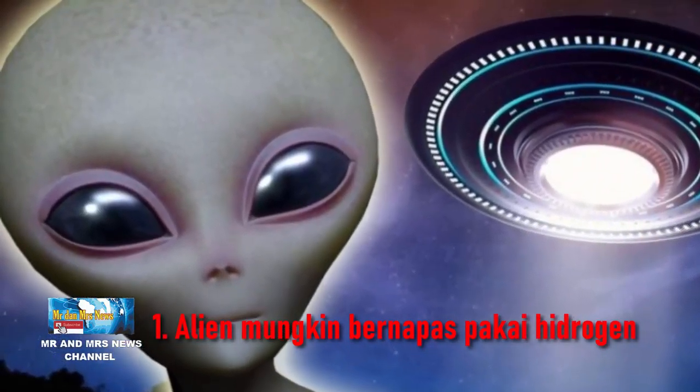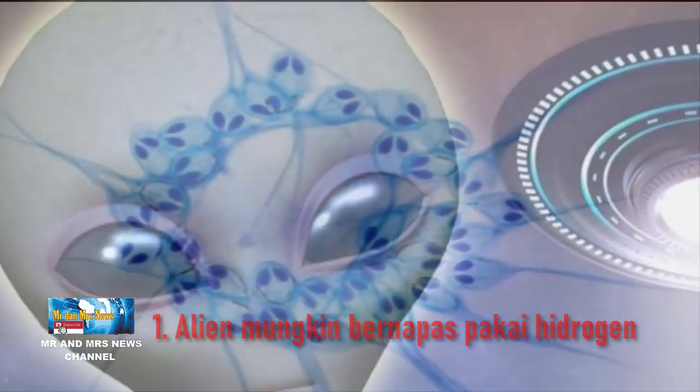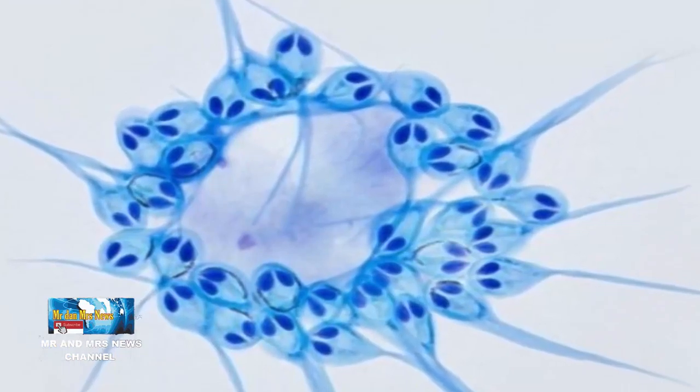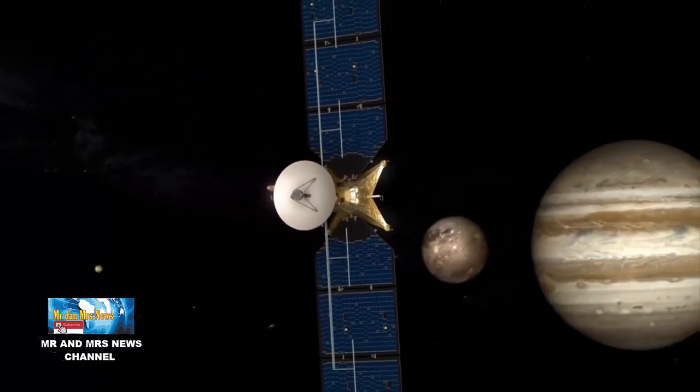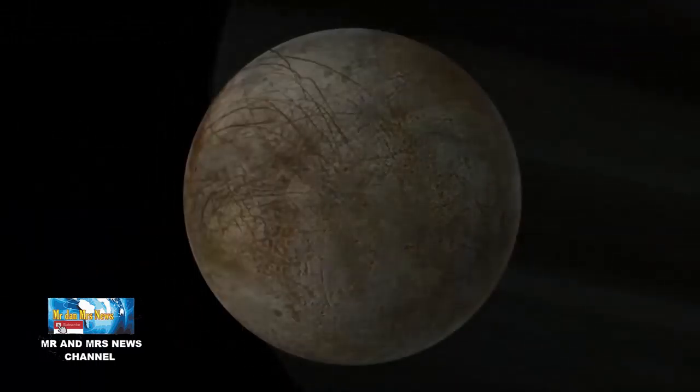Yang pertama, alien mungkin bernapas pakai hidrogen seperti segelintir mikroba. Sebagian besar penghuni bumi membutuhkan oksigen untuk bertahan hidup. Tetapi oksigen sebenarnya bukan gas yang paling umum di alam semesta.